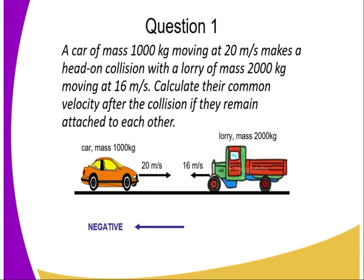A car of mass 1,000 kg moving at 20 m per second makes a head-on collision with a lorry of mass 2,000 kg moving at 16 m per second. Calculate their common velocity after the collision if they remain attached to each other.